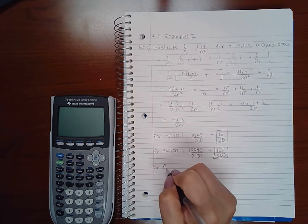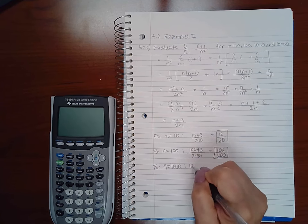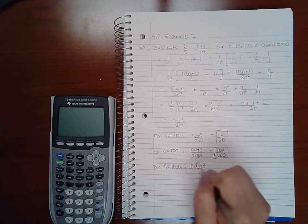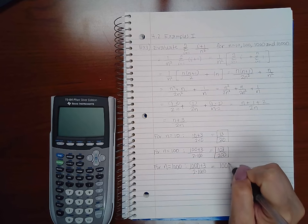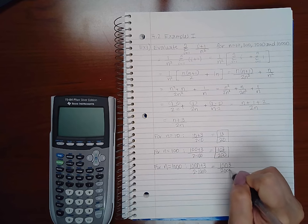For n equal to 1,000, we get 1,000 plus 3 over 2 times 1,000, so 1,003 over 2,000.